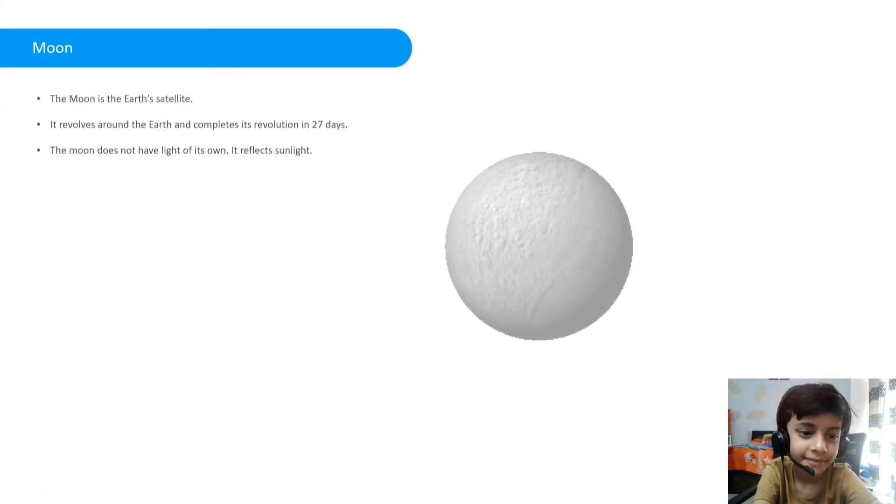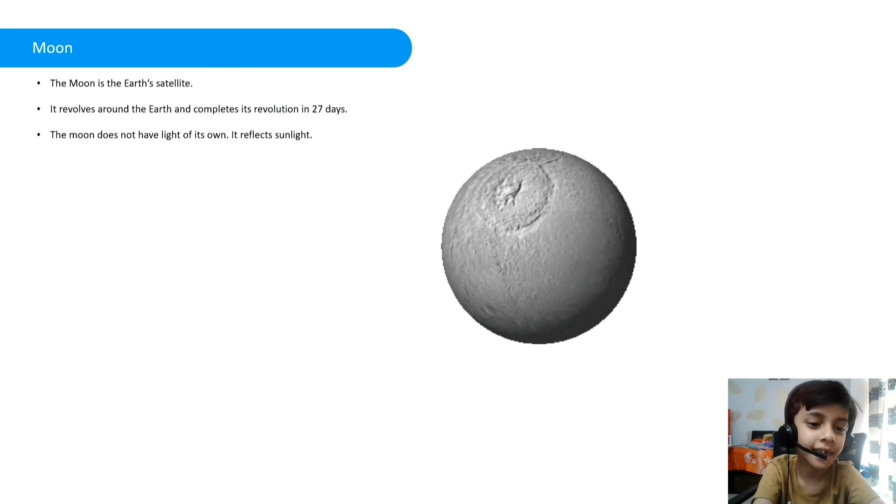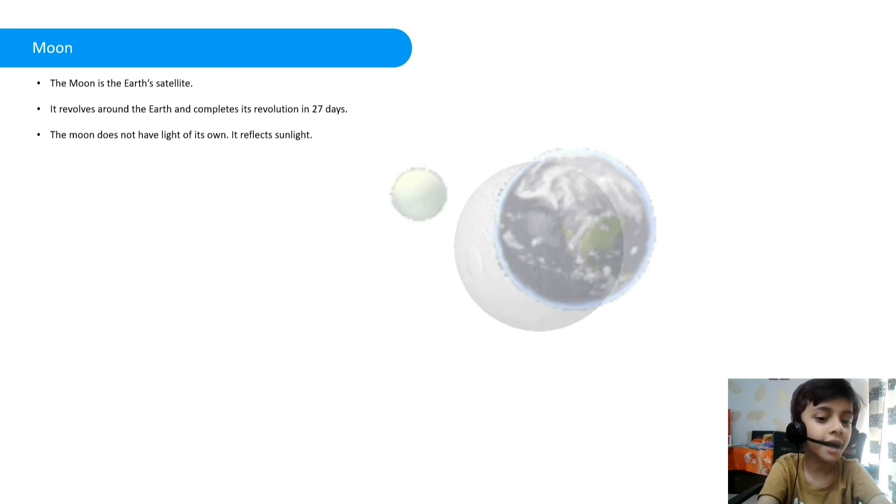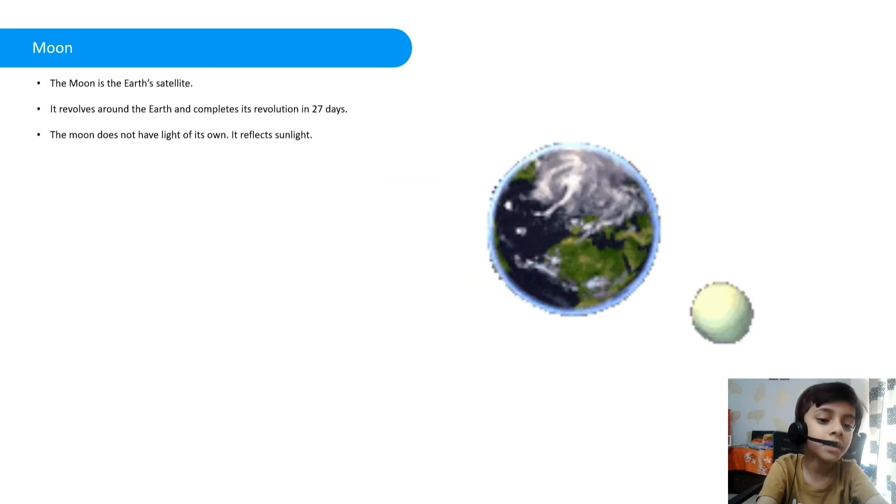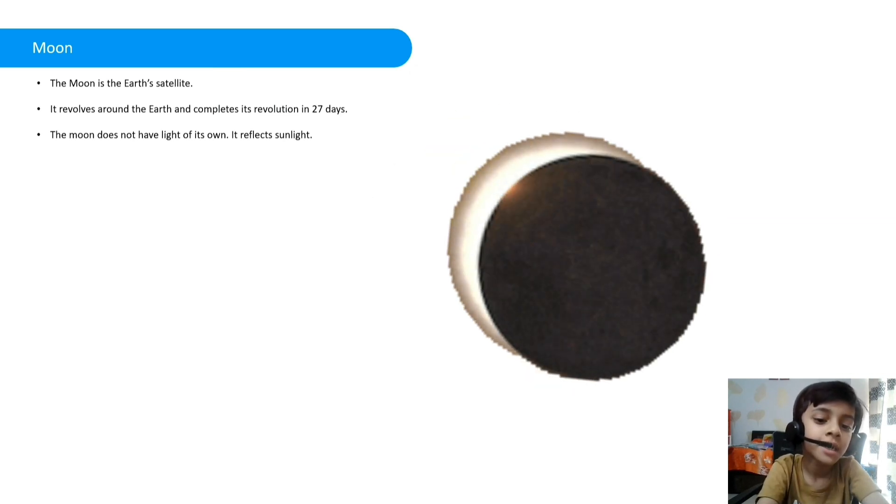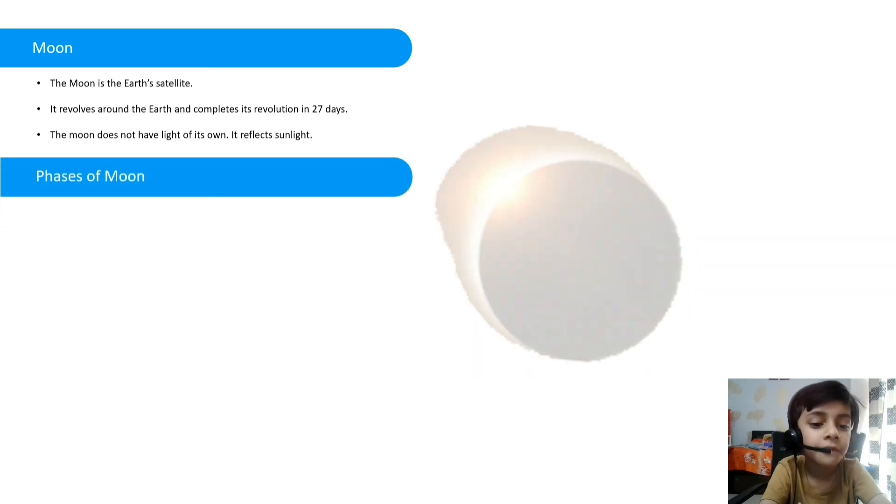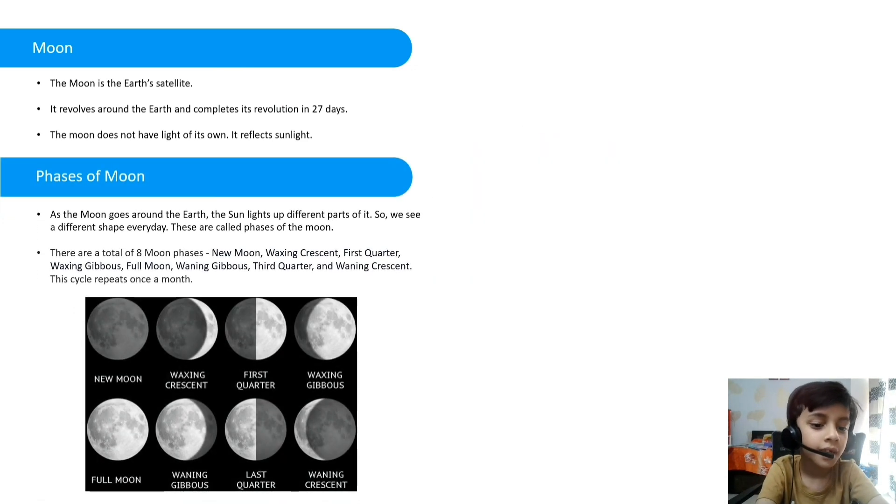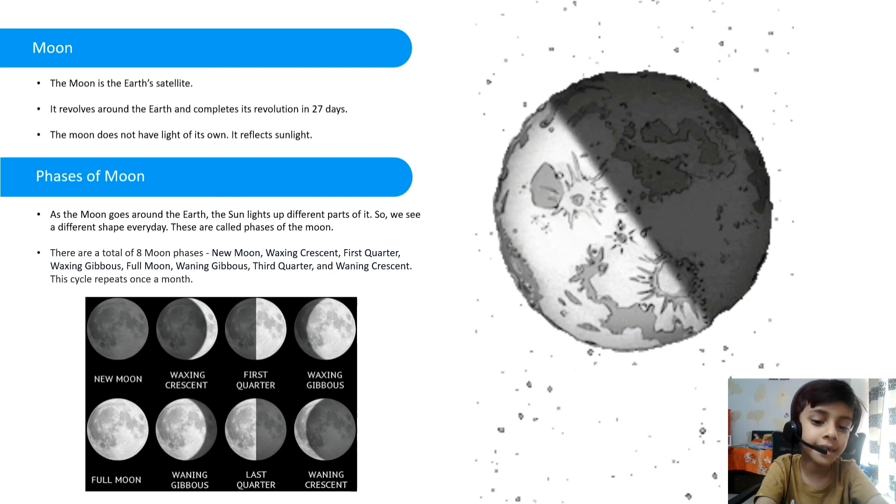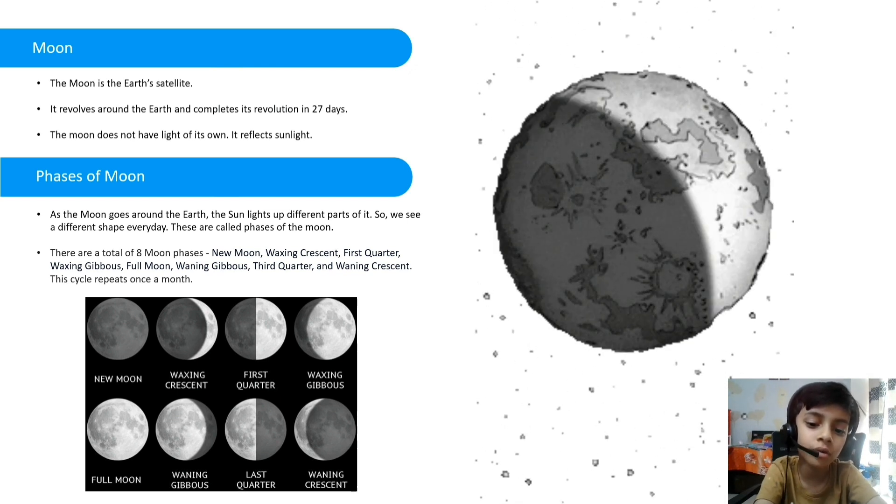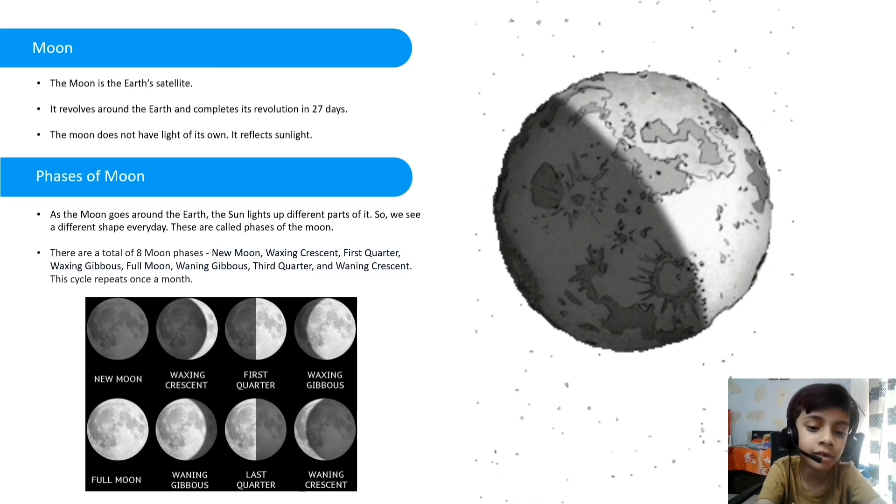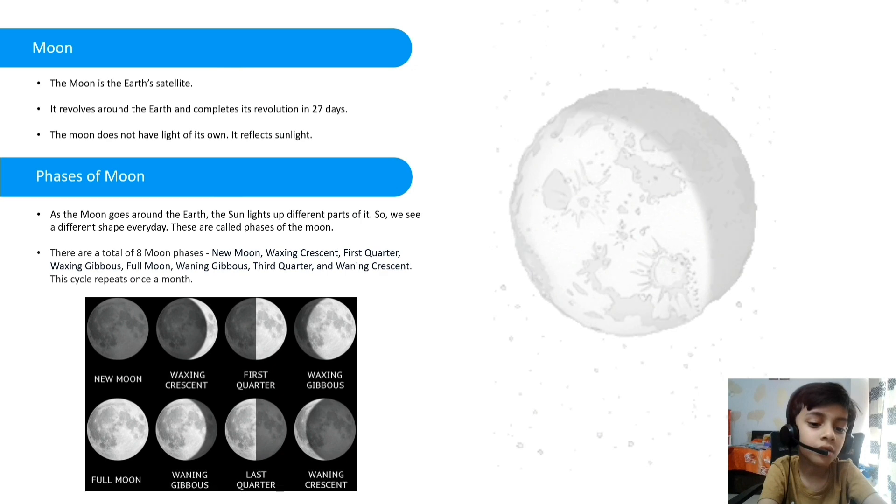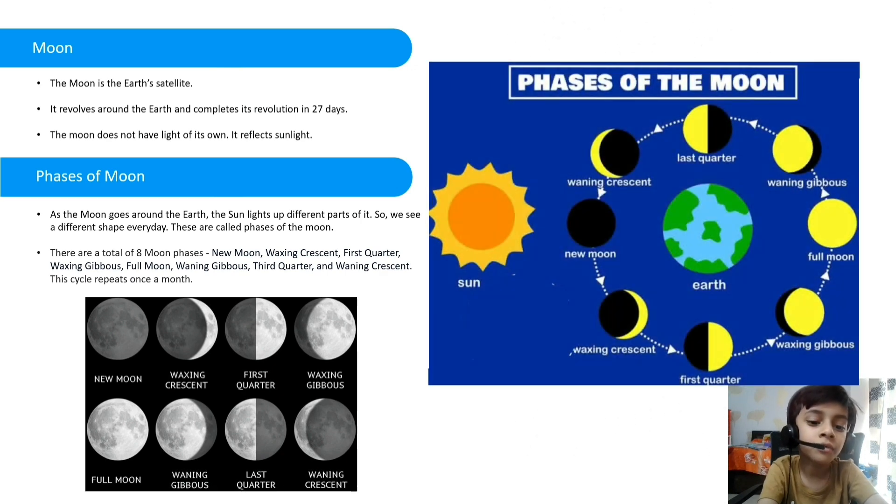Moon. The moon is the Earth's satellite. It revolves around the Earth and completes a revolution in 27 days. The moon does not have light of its own, it reflects sunlight. Faces of the moon: As the moon goes around the Earth, the sun lights up different parts of it so we see a different shape every day. These are called phases of the moon.